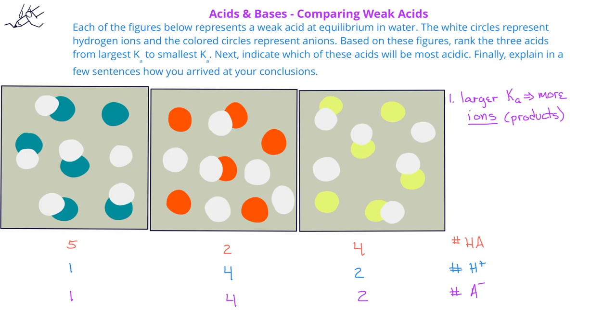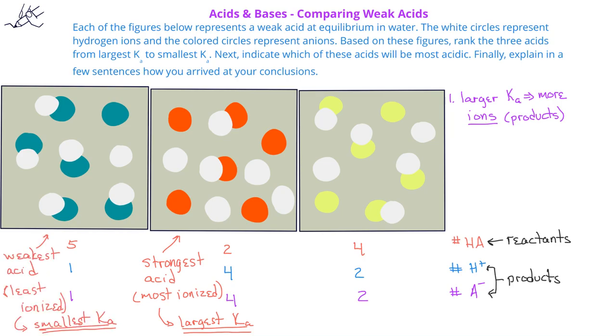And it has four weak acid molecules that are unionized. Since the second picture has the fewest undissociated molecules, that will be the strongest acid, since it has more of the hydrogen ions and anions present. The first picture with the most undissociated weak acid molecules will be the weakest acid. Since it's the weakest acid, it will also have the smallest value for the acid ionization constant.